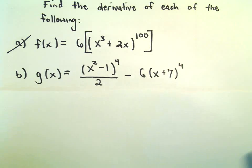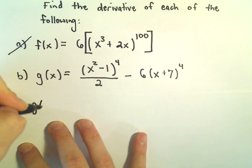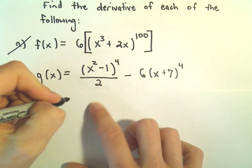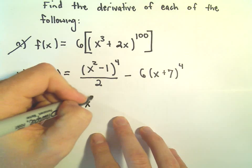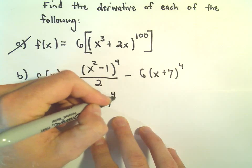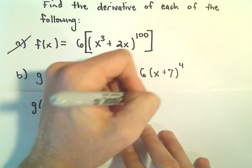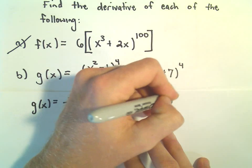And the first thing I'm going to do is just rewrite this a little bit. So g of x, I'm just going to pull the over 2, I'm going to write that out front as a 1 half. And then we still have x squared minus 1 to the 4th minus 6 times x plus 7 to the 4th power.